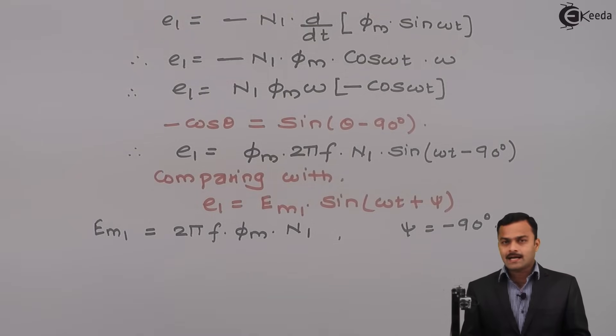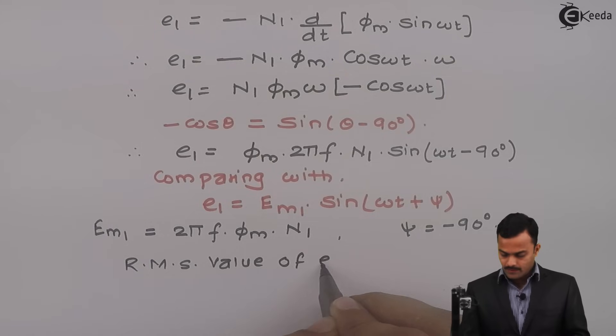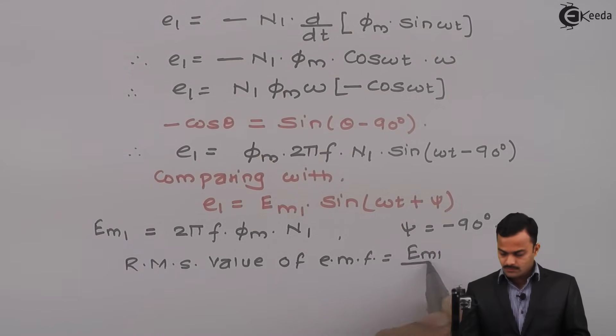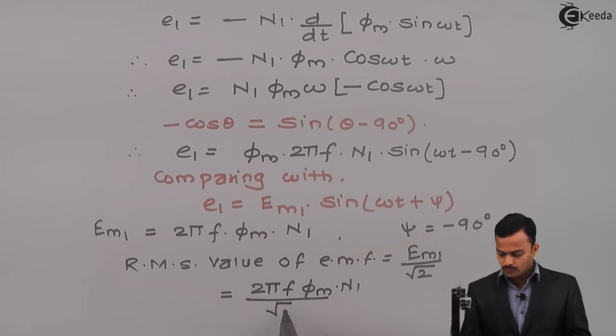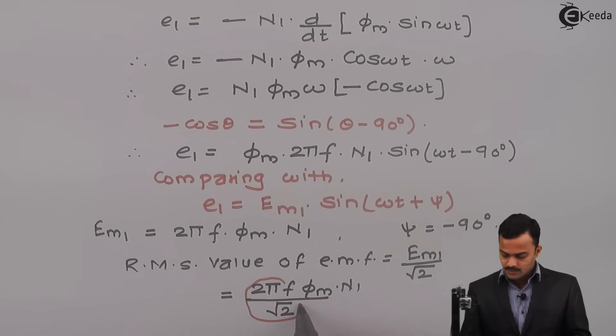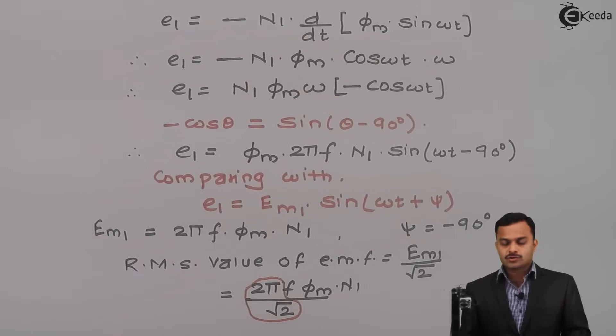We are dealing with RMS value. So RMS value of E1 equal to maximum value divided by root 2. This is equal to 2 pi f into phi m into n1 divided by root 2. If you see carefully, this 2 pi by root 2 is a constant. If you solve, that will be 4.44.